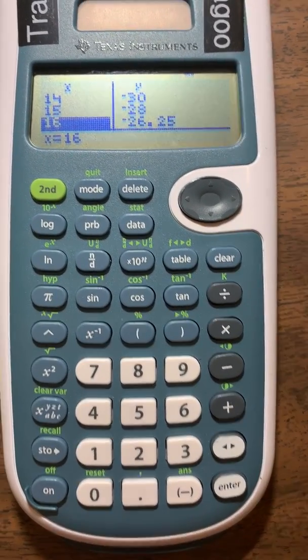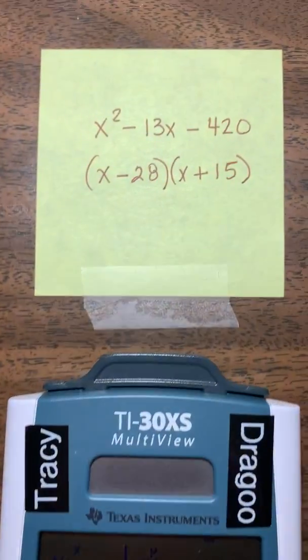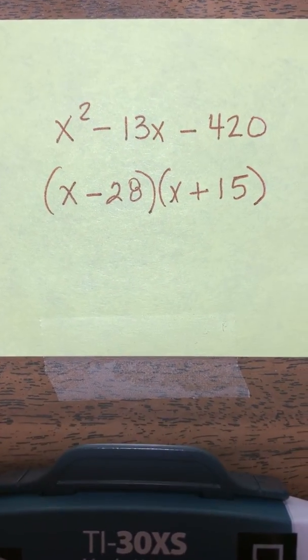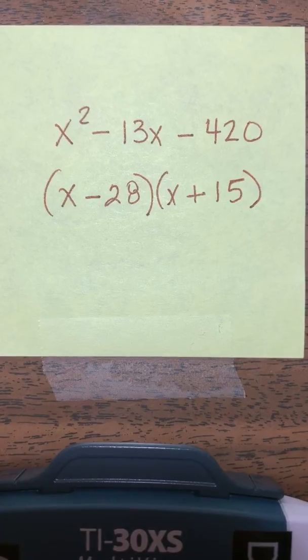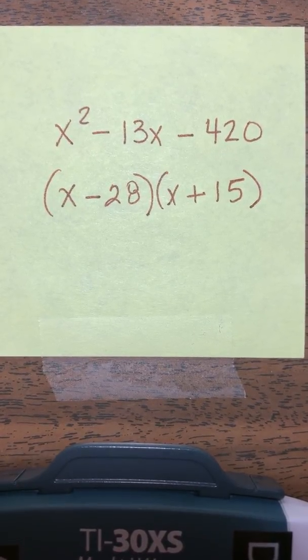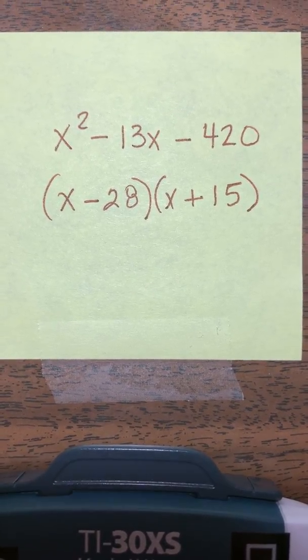We can go back to our problem and put in the complete factored expression. We want the negative 28 and the positive 15, so that when we add them back together, we get negative 13 in the middle.